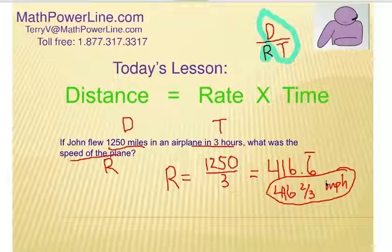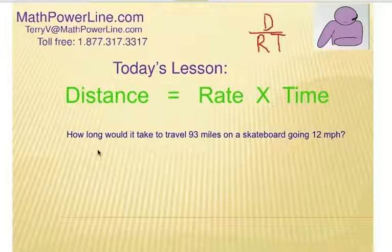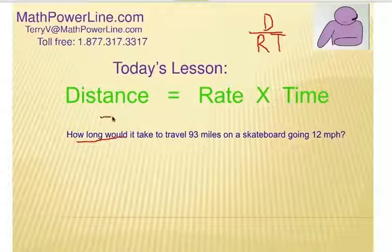All right, so that's what to do if you are missing the rate and looking for speed. Final example: How long would it take to travel 93 miles on a skateboard going 12 miles per hour? So how long? That is asking about time. Traveling 93 miles, that's going to be our distance. And going 12 miles per hour, that's obviously our rate, rate of speed.